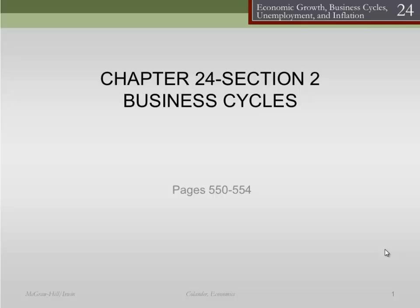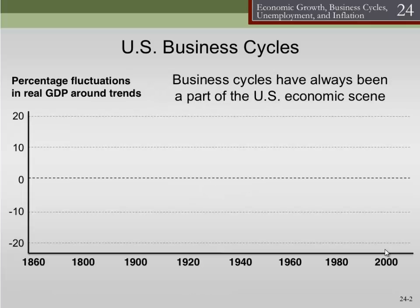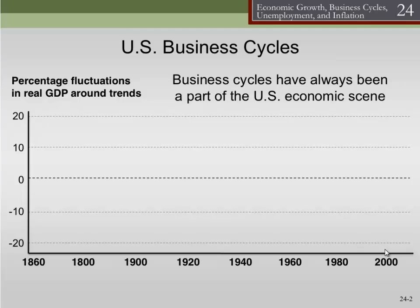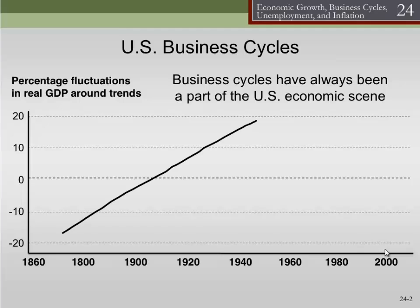Let's go back to our presentation and talk a little more about business cycles. I want to show you a graph — a fairly long run graph. We start back in 1860 and go all the way up until the early 2000s. What we've done is taken GDP, which would normally look like a rising trend, and turned it on its side so that we got rid of that long run growth pattern. What we can see is how it wiggles. The trend part of GDP we think of as the long run, and the wiggle about it we think of as the short run, or the business cycle.